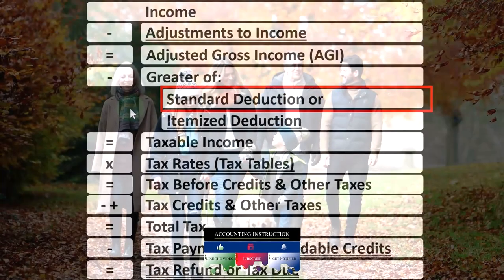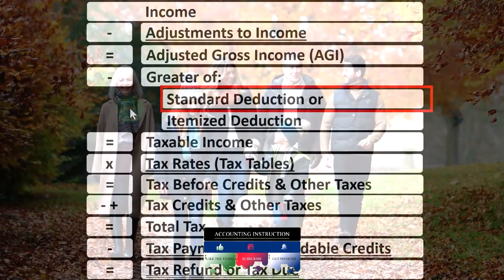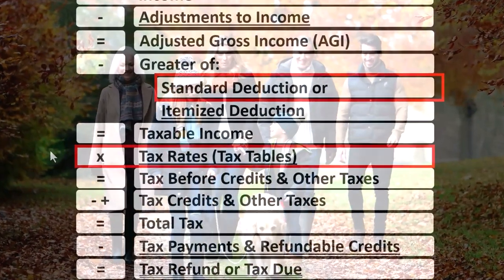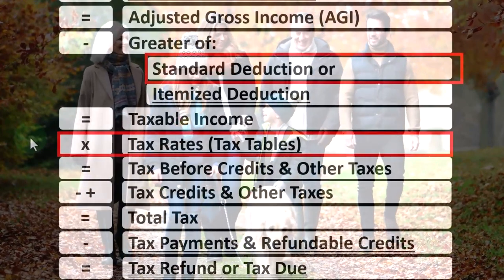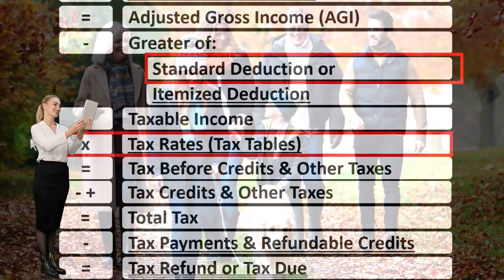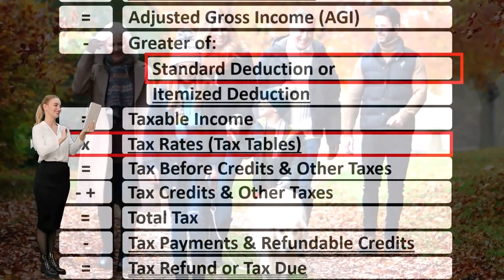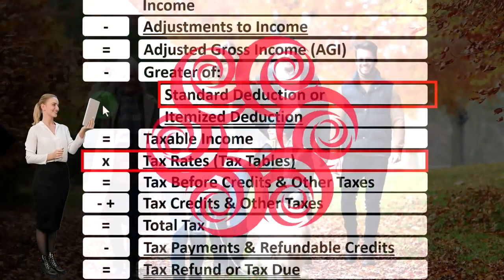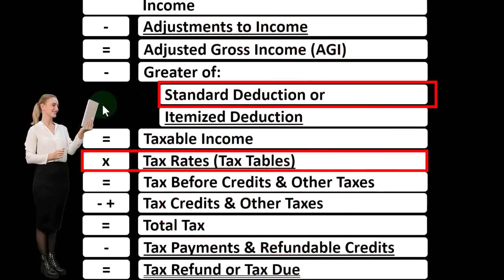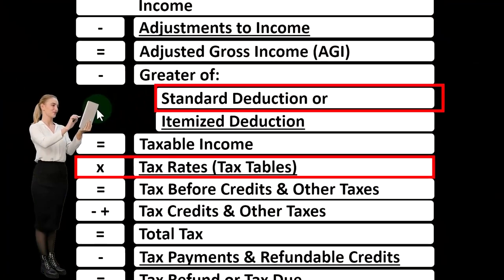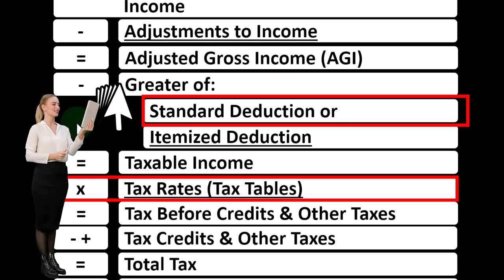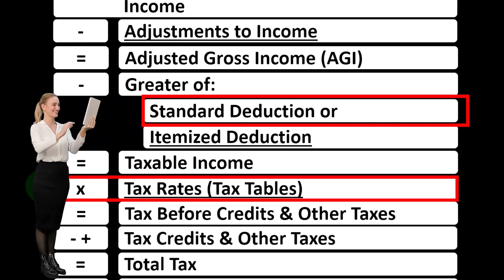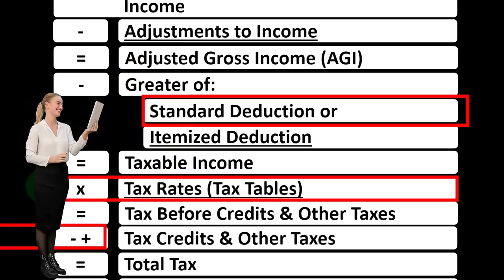Another area that could be impacted by dependents is the tax rates, which will usually be tied to whether or not there was a change in filing status. So in that first scenario where we had a single filer moving up to head of household, there might also be a change in the progressive tax rates when actually calculating the taxes.